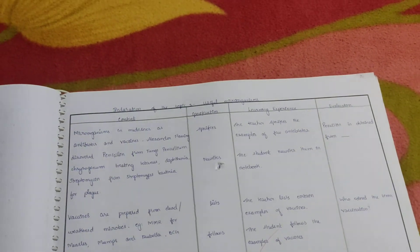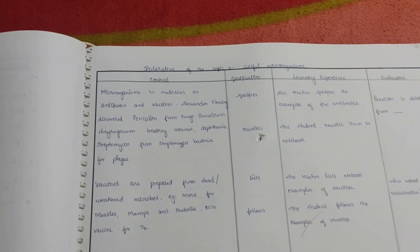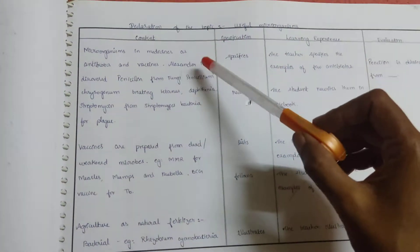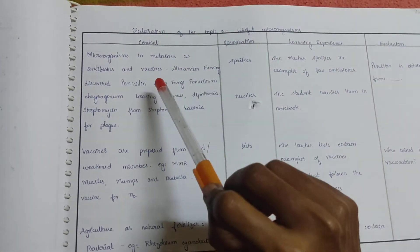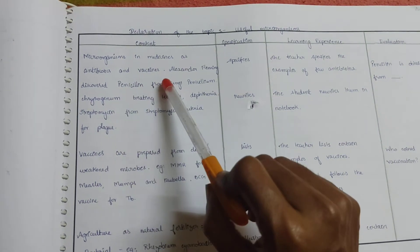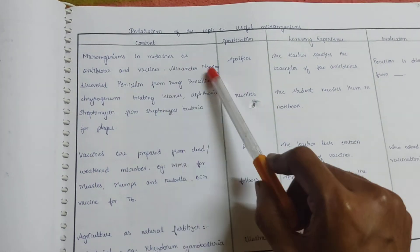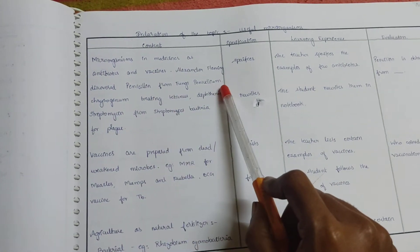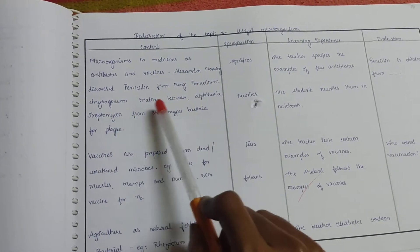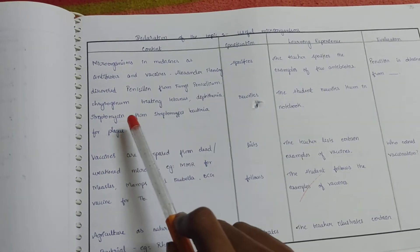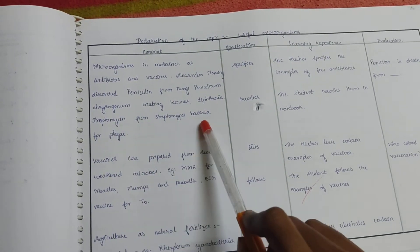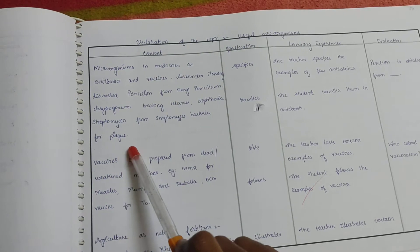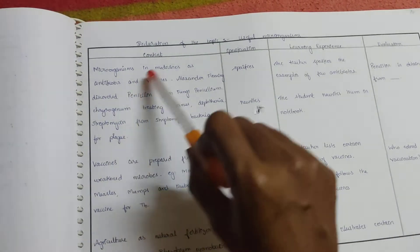This is our declaration page. Here, the teacher specifies the examples of few microorganisms in medicines as antibiotics and vaccines. Alexander Fleming discovered Penicillin from fungi Penicillium chrysogenum treating tetanus diphtheria. Streptomycin from Streptomyces bacteria for plague. We can just give a hint about it and explain.